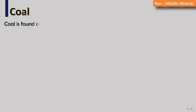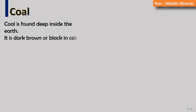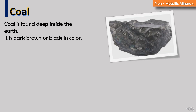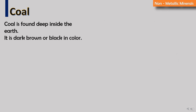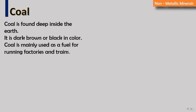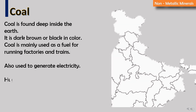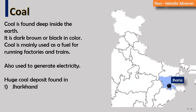Coal is found deep inside the earth. It is dark brown or black in color. Coal is mainly used as a fuel for running factories and trains, and also to generate electricity. Huge coal deposits are found in Jharkhand, West Bengal, and Chhattisgarh.